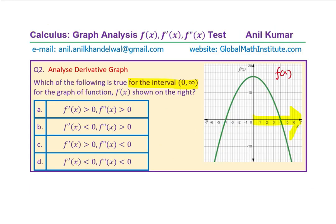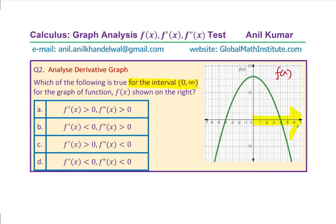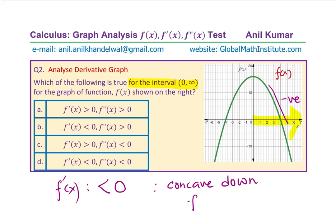Let us now move on to question number 2, which asks which of the following is true for the interval 0 to infinity for the graph of the function. We are given the graph of f(x). From 0 to infinity, drawing a tangent anywhere shows the slope is negative, so f'(x) < 0. Also, the graph is concave down over this interval, which means f''(x) < 0. Since both derivatives are negative, the correct answer is option D.